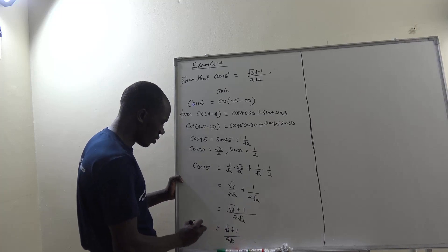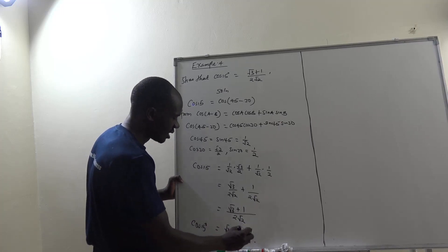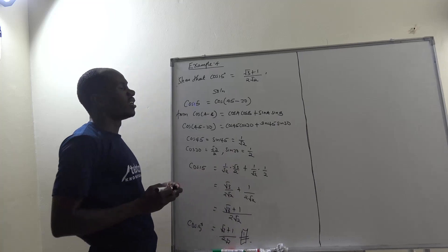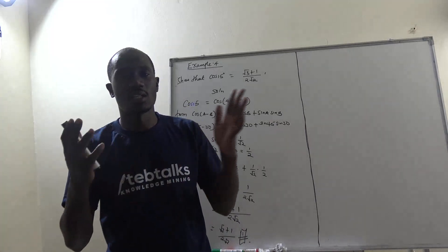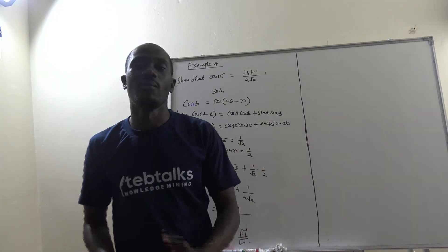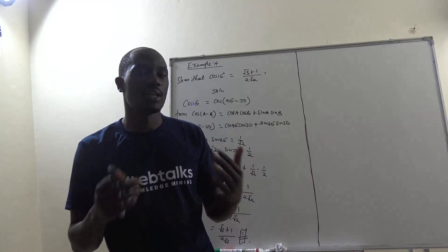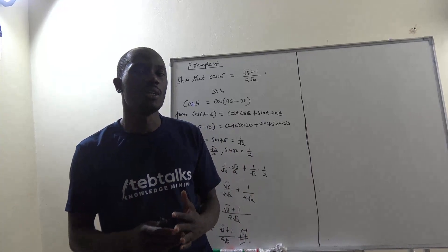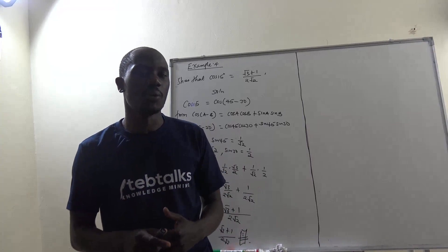Which is cos of 15 degrees as required. You can see, when the number comes that way, that's how we do this one. And we are going to be following more examples as you continue following me on this YouTube channel. Thank you.